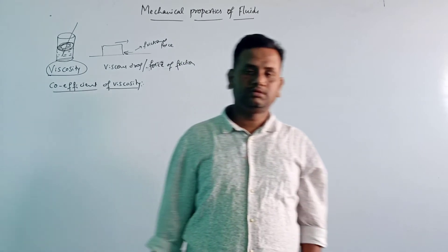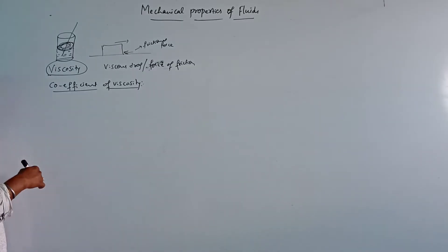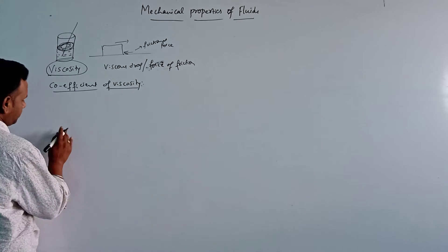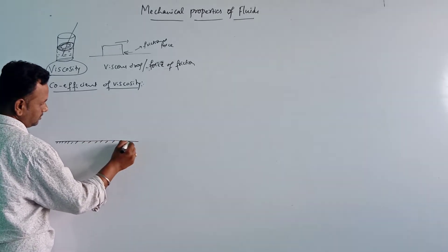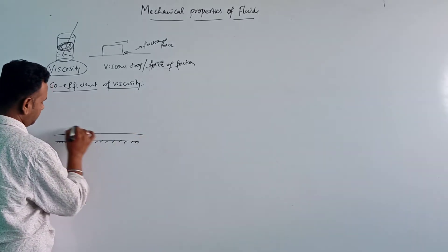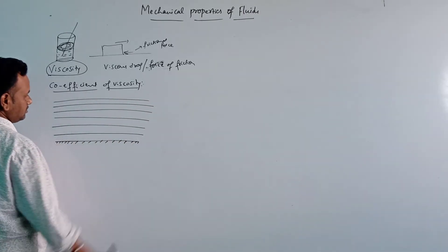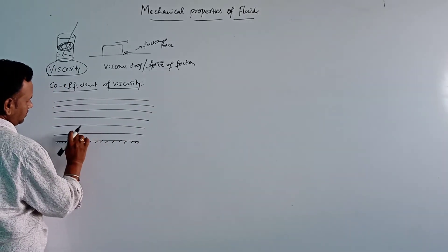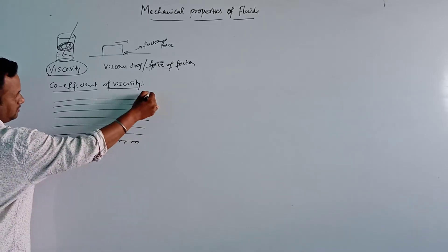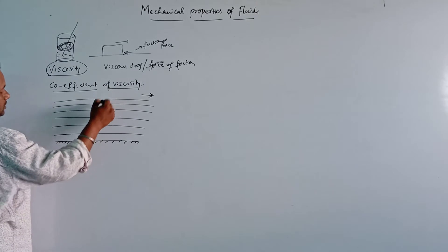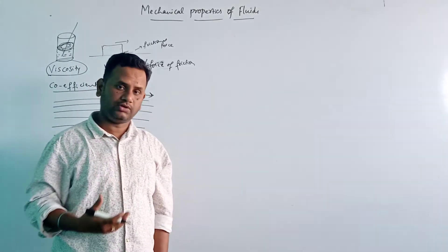Now let us move on to the next topic: coefficient of viscosity. Let us consider a liquid flowing over a horizontal surface. This is the horizontal surface over which the liquid is flowing, and this is the direction of flow. The liquid is flowing with some velocity.